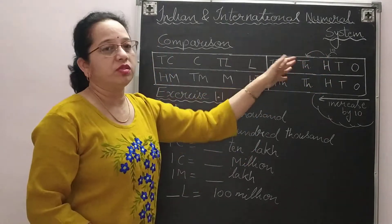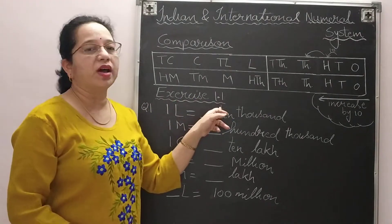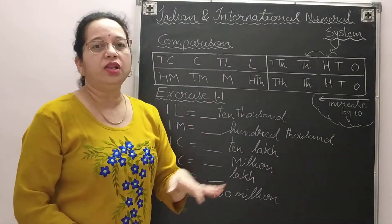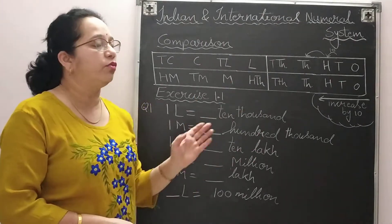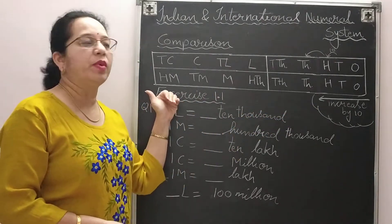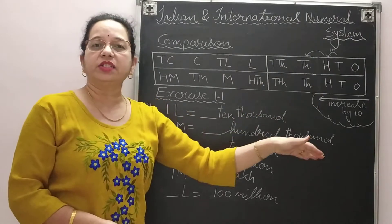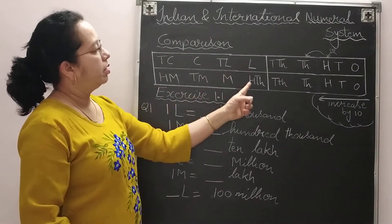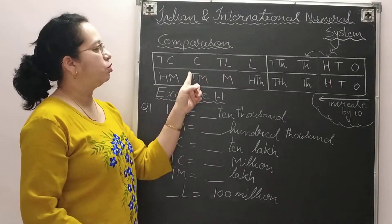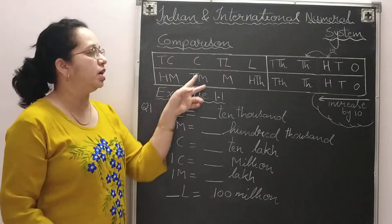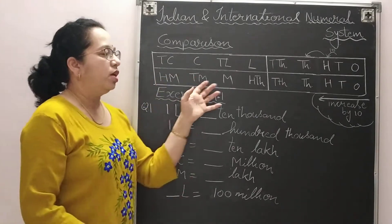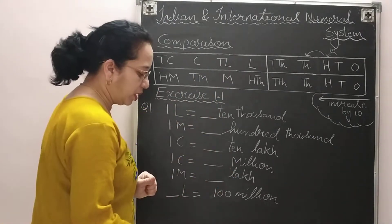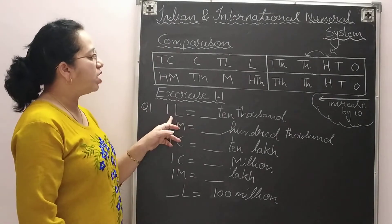We'll use this concept to solve questions from Exercise 1.1. Moving towards the right, the value decreases by ten. So: left side increases by ten, right side decreases by ten. From the chart, one lakh equals one hundred thousand, ten million; one crore equals ten million; and ten crore equals one hundred million. If direct relations are not given, we find how many jumps we are making.